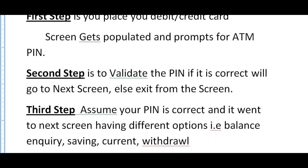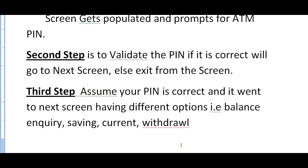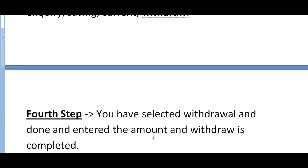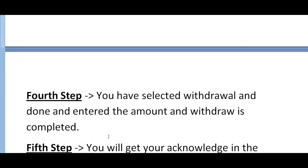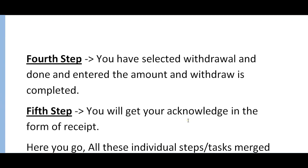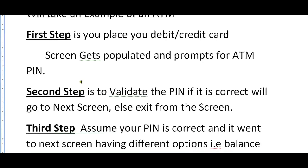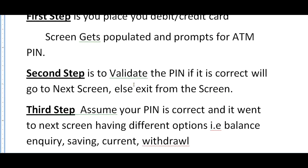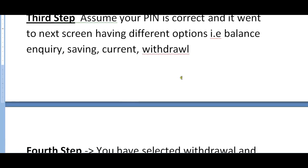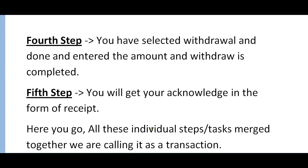The third step: assuming your PIN is correct, it goes to a screen with options like balance inquiry, savings, current, or withdrawal. I'll assume I select withdrawal, enter the amount, and the withdrawal is completed. You get an acknowledgement — a receipt. All these individual steps are considered tasks. Each individual step — placing the card, validating the PIN, entering the amount, withdrawal — each is called a task.